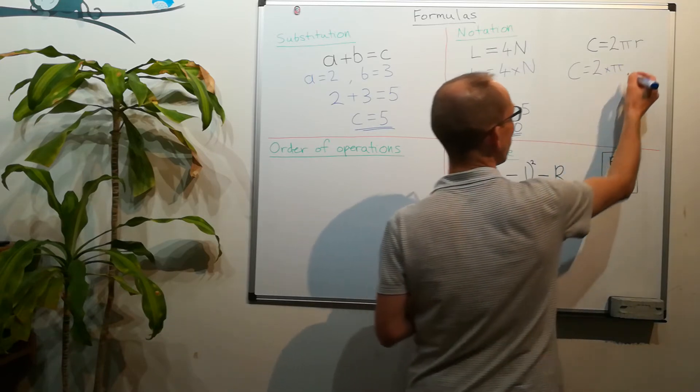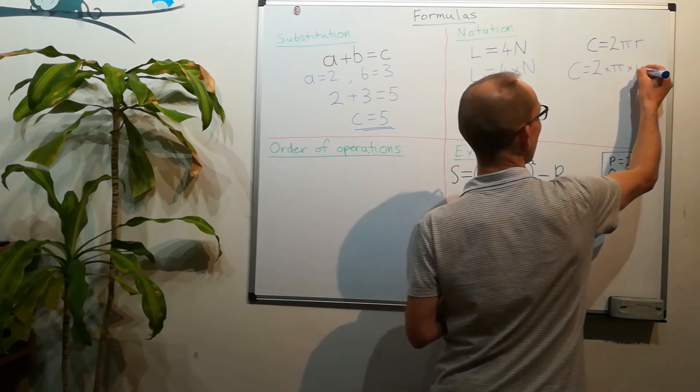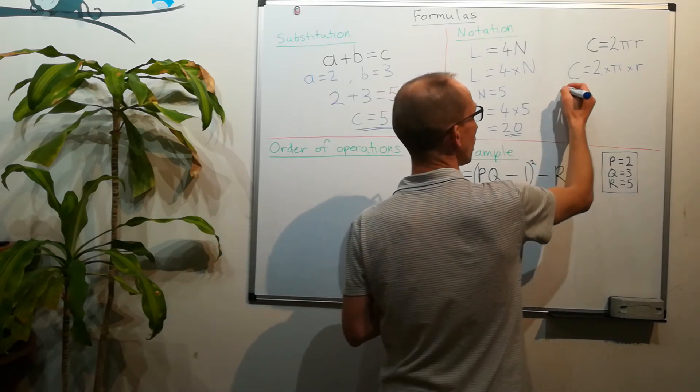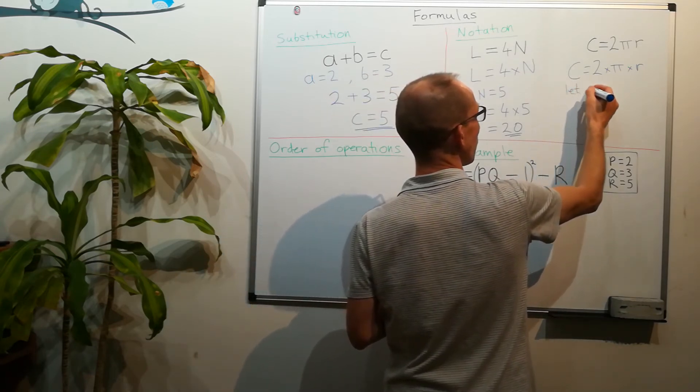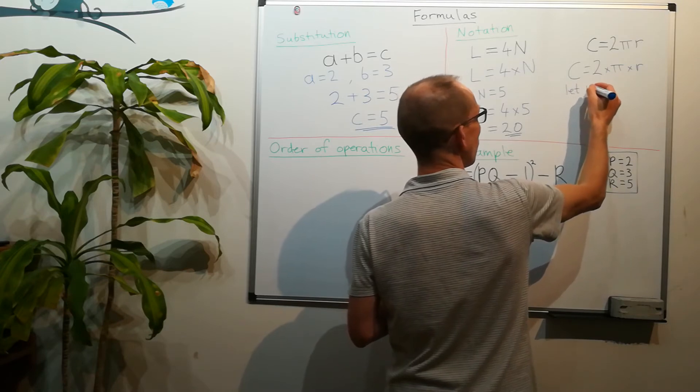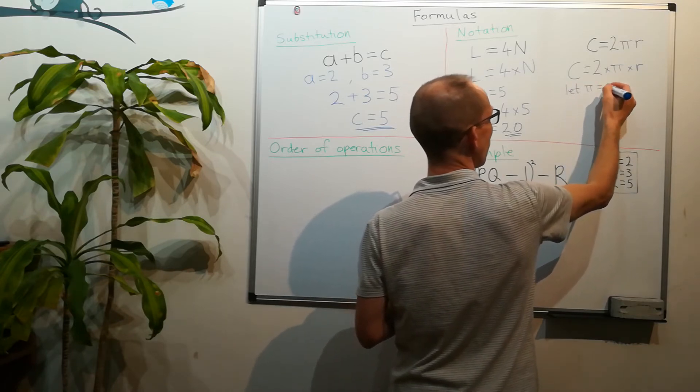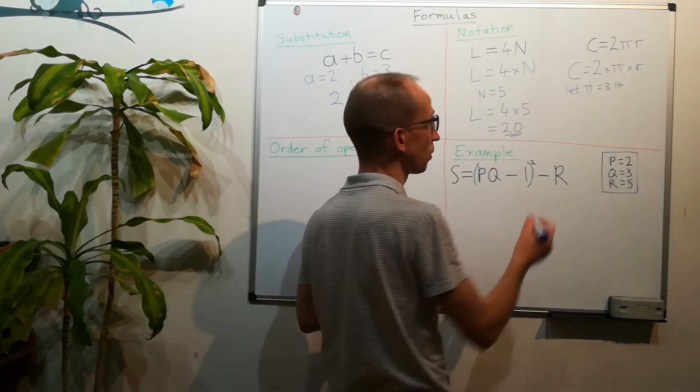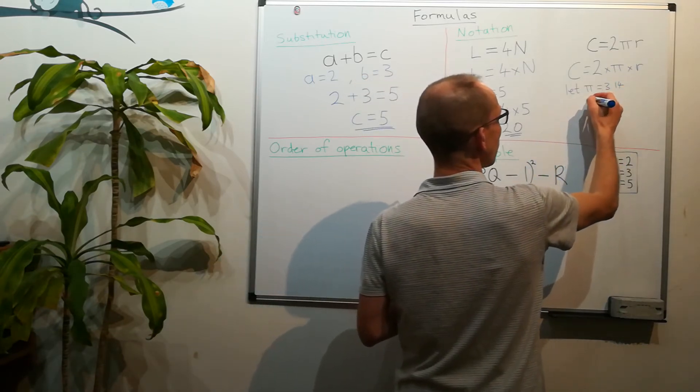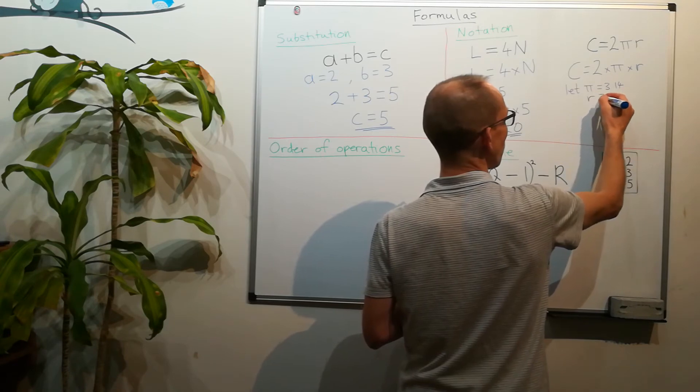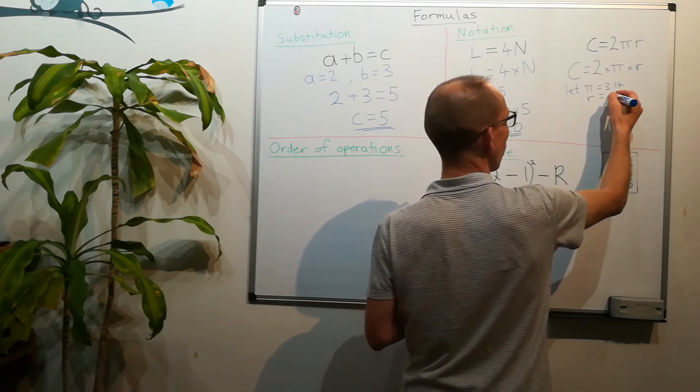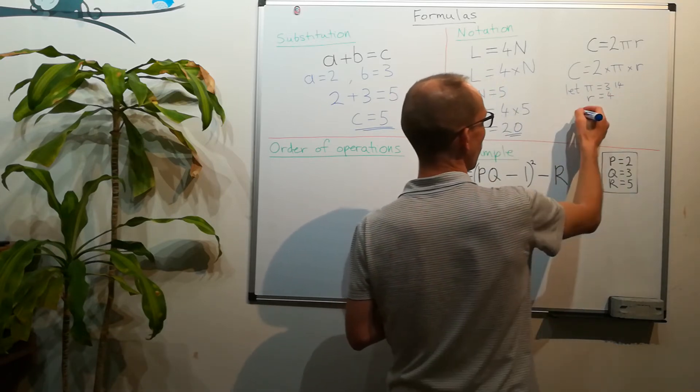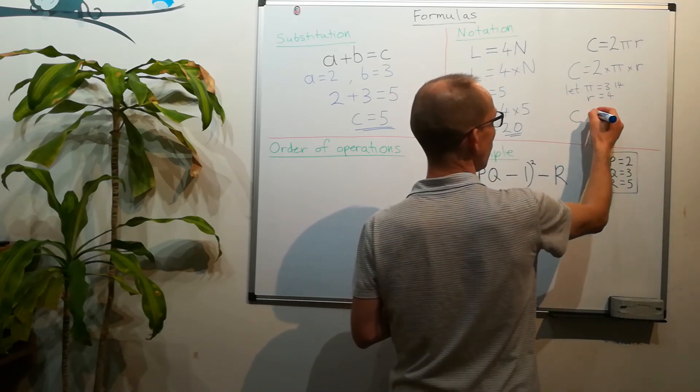And we might be told that pi equals 3.14, so we're just going to use an approximation for pi, and the radius of the circle is 4.